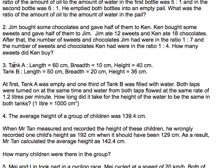I don't have space to draw the tank for you, but let's just imagine tank A with length 60, breadth 10 and height 40, and tank B with length 50, breadth 20 and height 36. At first, tank A was empty, and one third of tank B was filled with water. Both taps were turned on at the same time, and water from both taps flowed at the same rate of 1.2 liters per minute. How long did it take for the height of water to be the same in both tanks?